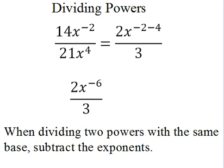So now negative 2 minus 4 is negative 6, giving us 2 times x to the negative 6 over 3. But we can't have a negative exponent in our answer. Since a negative exponent means reciprocal, x to the negative 6 has to move to the denominator and become x to the positive 6. So the final answer is 2 over 3 times x to the positive 6th.